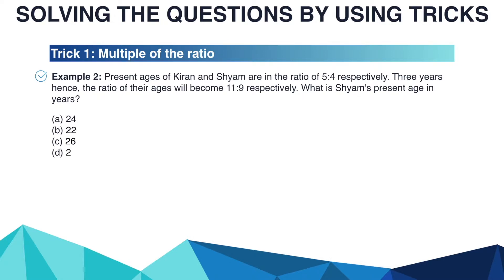We note that the ages of Kiran and Sham are in the ratio 5 to 4. Therefore Sham's age should be a multiple of 4. Only options A (24) and D (28) have Sham's age as a multiple of 4, so the answer is either A or D.